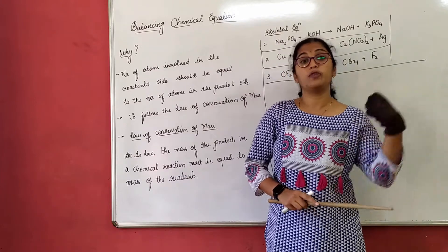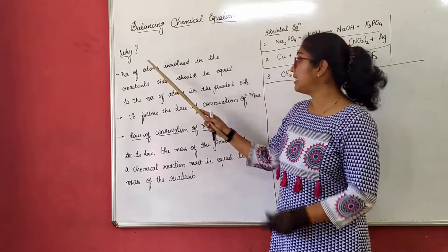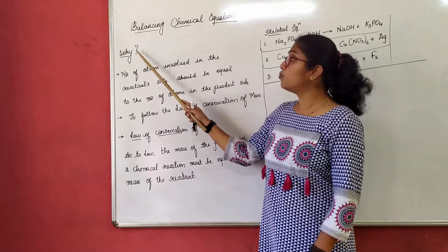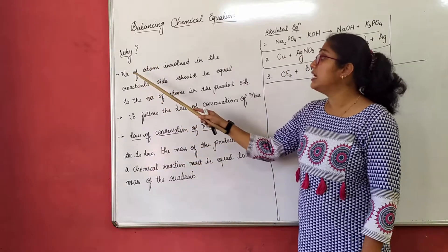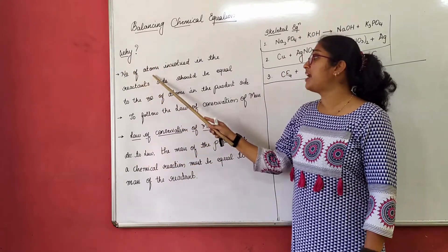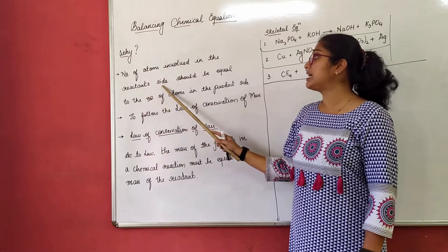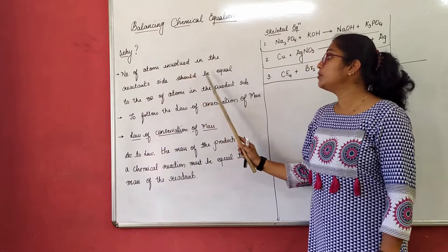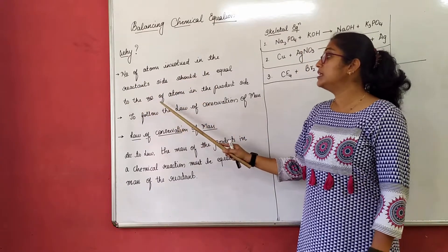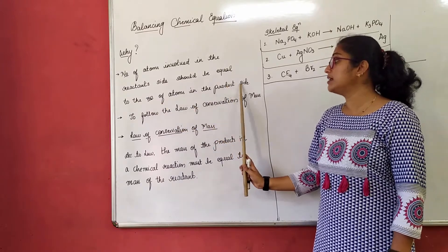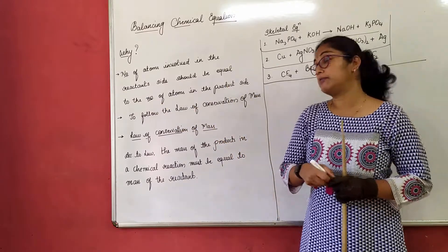Why cannot we go ahead with an equation as given? Why do we have to balance a chemical equation? Because the number of atoms involved in the reactant side should be equal to the number of atoms in the product side.